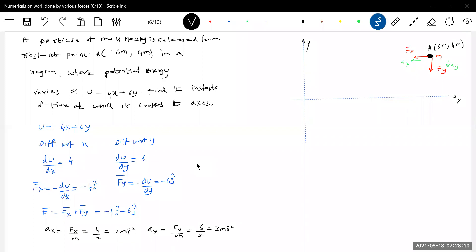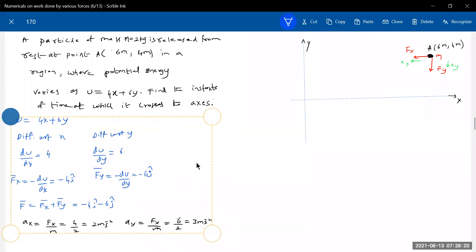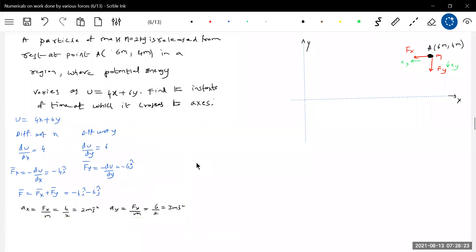For y-displacement: y = (1/2)ay·ty². Since it's released from rest, y₀ = 4, ay = 3. So 4 = (3/2)ty², which gives ty = √(8/3) seconds.